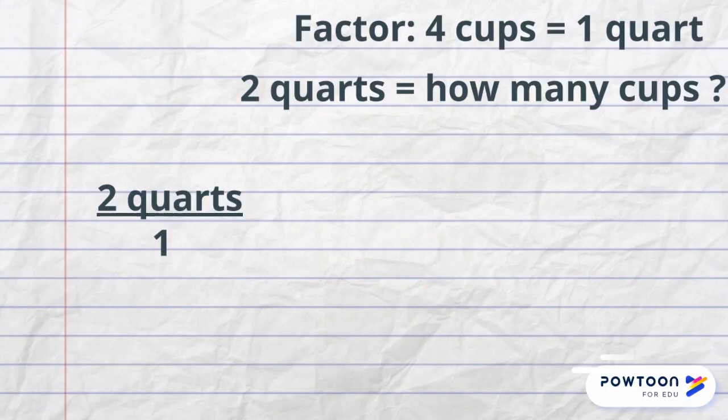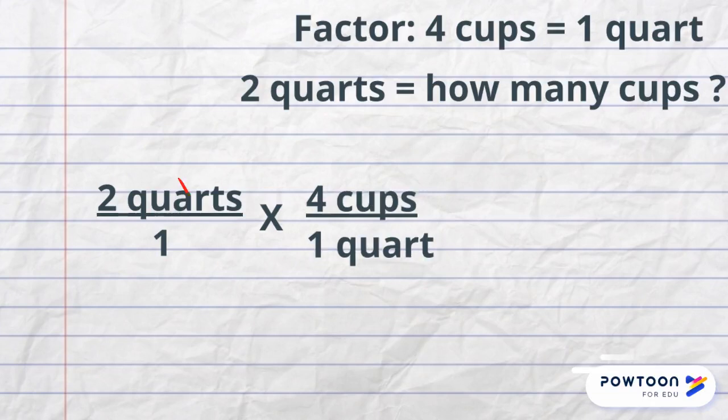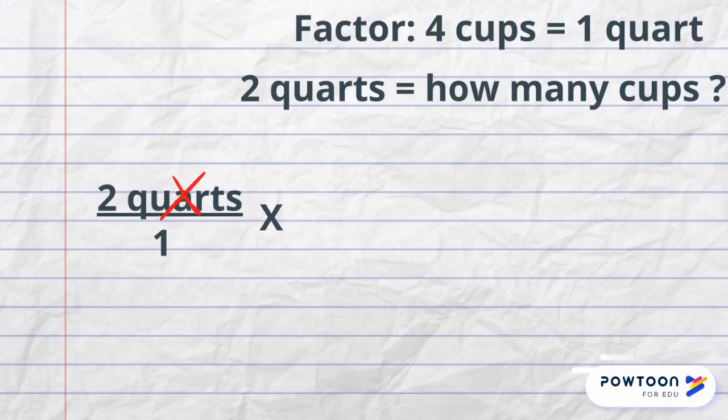Dimensional analysis involves multiplying by factors. Factors are equivalents, so I can use my four cups equivalent to one quart as my factor. When multiplying fractions, we cancel units if they exist as the numerator in one fraction and as the denominator in another fraction. Therefore, I know right away that I want to cancel the units of quarts, so I will write quarts in the denominator of the second fraction. These will cancel when I multiply.